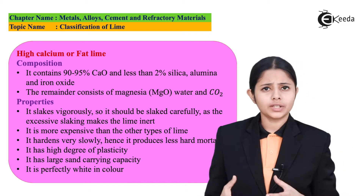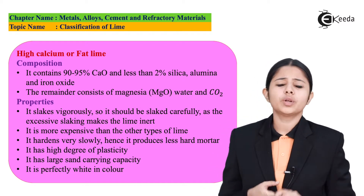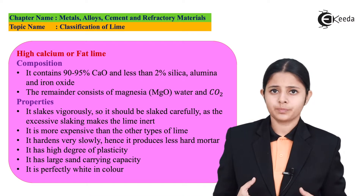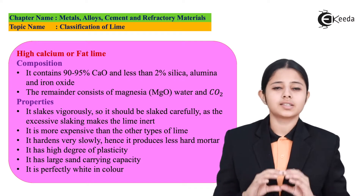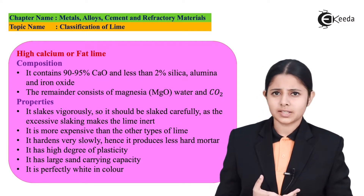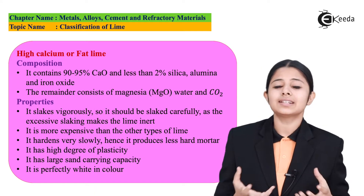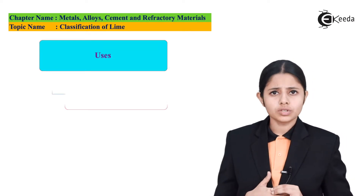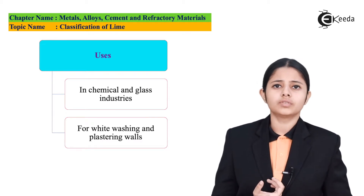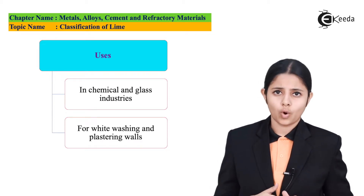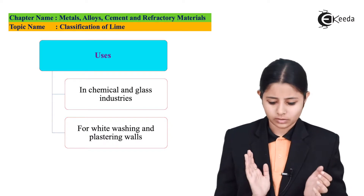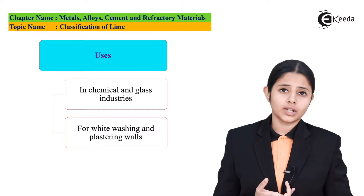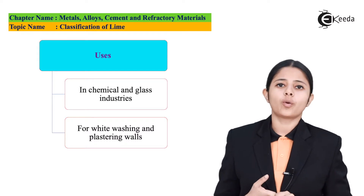Fat lime is one of the most expensive limes. It gives great quality to the cement. It hardens very slowly but once it hardens it sets properly. It has high plasticity, high sand carrying capacity, and it is perfectly white in colour. Its uses include whitewashing walls after construction, use in the chemical and glass industry, softening hard water, and formation of mortar.